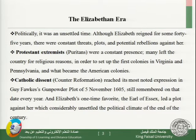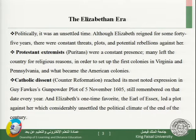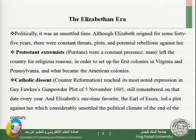When we talk about the English Renaissance, we talk mostly about the Elizabethan era — the time of Queen Elizabeth I. Politically, it was an unsettled and unstable time. Although Elizabeth reigned as queen for some 45 years, there were constant threats, plots and potential rebellions against her. England is a Protestant country at this point, but there is a movement of Protestant extremism called the Puritans, who were a constant presence and a constant threat on the English monarchy. Many of them left the country for religious reasons and went to set up colonies in Virginia and Pennsylvania — the first English colonies in America.